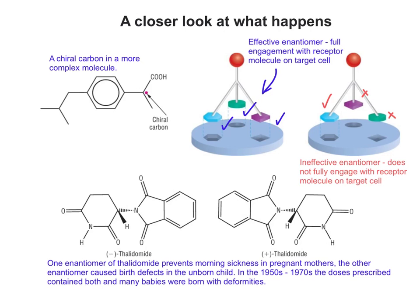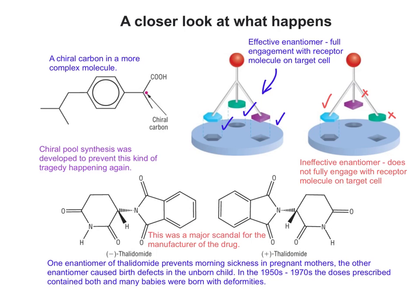So moving to the molecule at the bottom of the page, this is a medicine called thalidomide. It prevents morning sickness in pregnant mothers, but only one enantiomer does this. The other enantiomer caused birth defects in the unborn child. In the 1950s to 1970s, the doses that were prescribed and given out by doctors inadvertently—the doctors themselves didn't know this—contained both. So it not only prevented morning sickness, but the other enantiomer that was also present would cause birth defects in the unborn child. This was obviously a major scandal for the manufacture of the drug at the time.